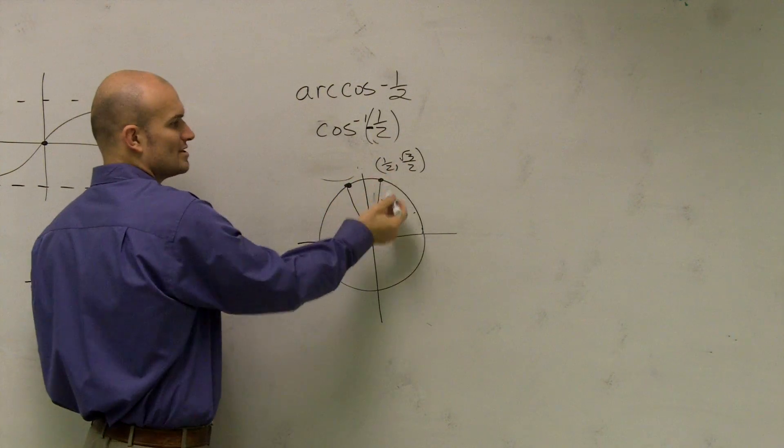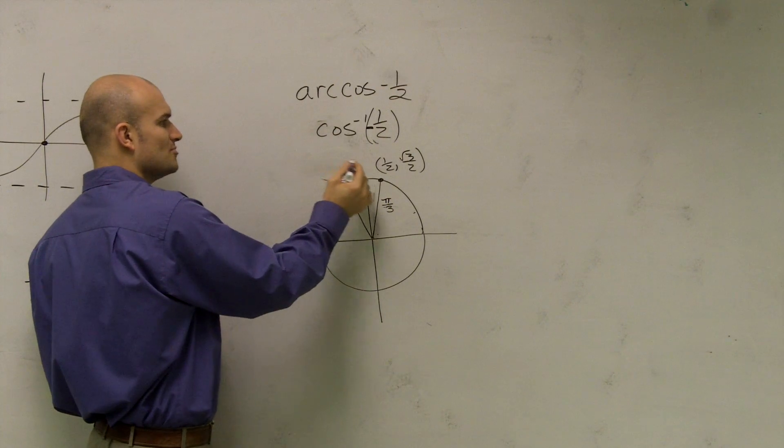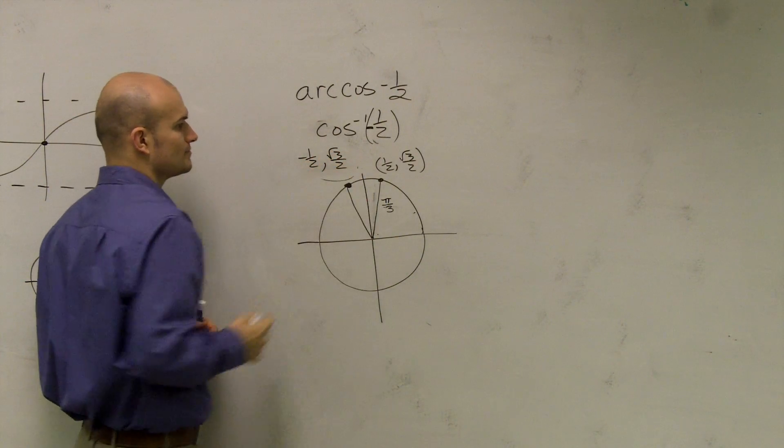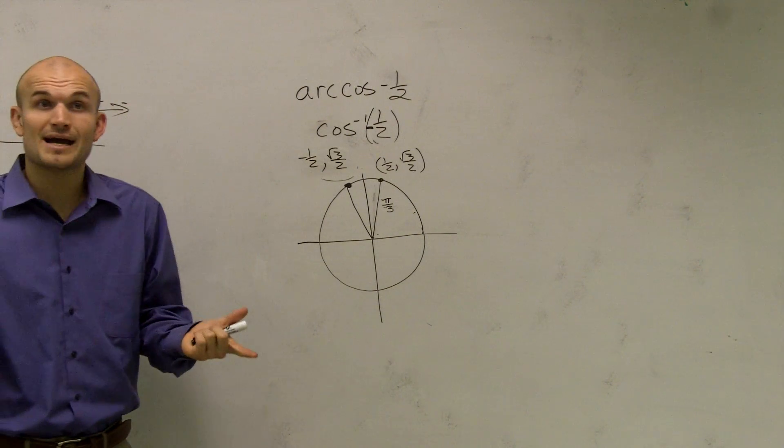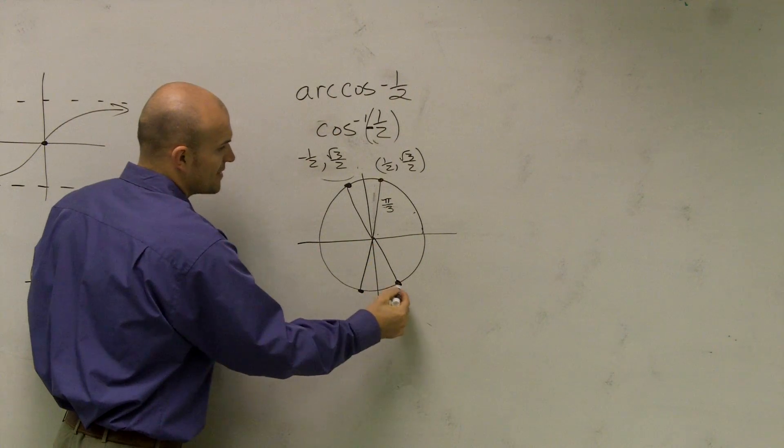So, therefore, if we notice that this is 1 half and this is square root of 3 over 2, then this one is going to be negative 1 half radical 3 over 2. Right? Now, there's two other times when cosine is 1 half or negative 1 half. We have this point down here and this point down here.